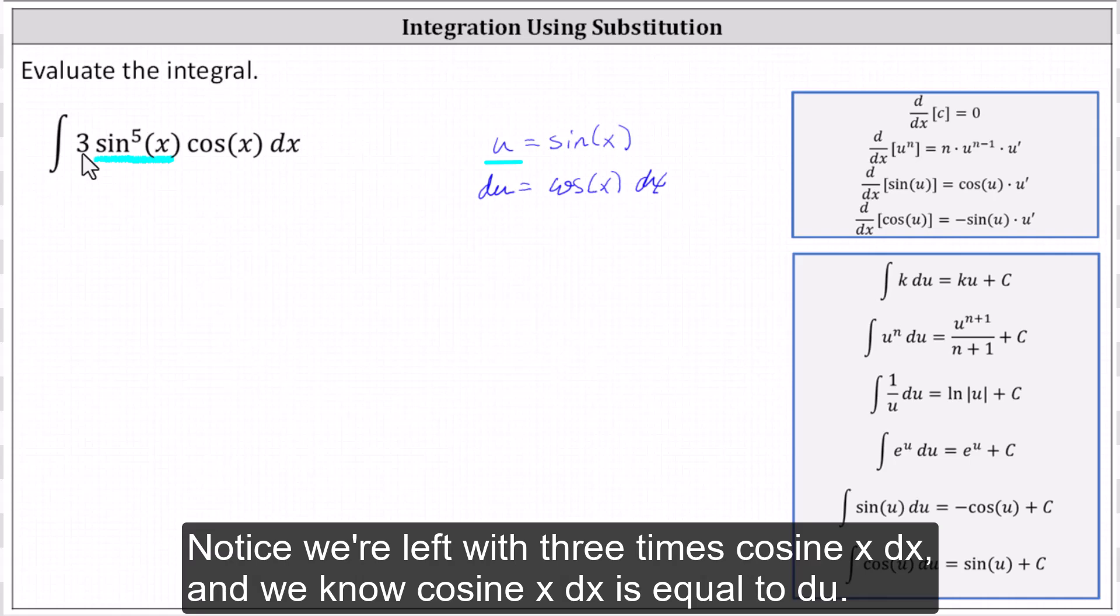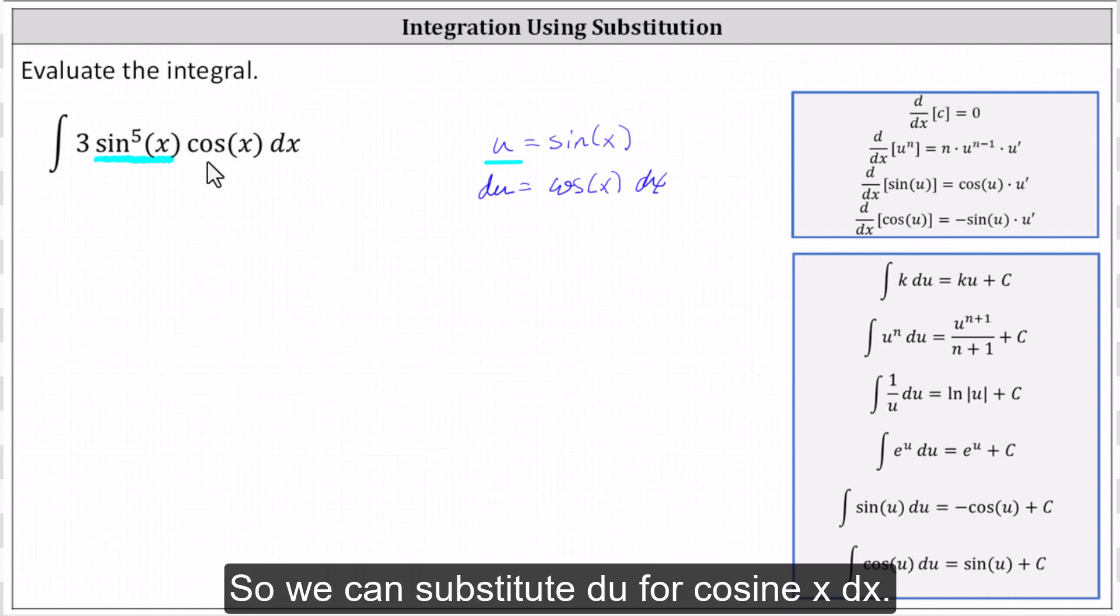Notice we're left with three times cosine x dx, and we know cosine x dx is equal to du. So we can substitute du for cosine x dx.